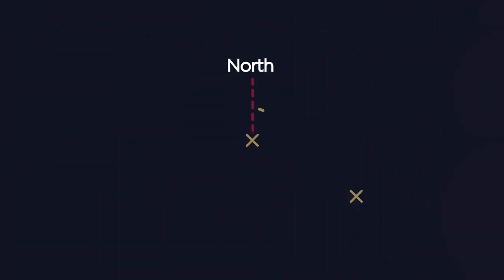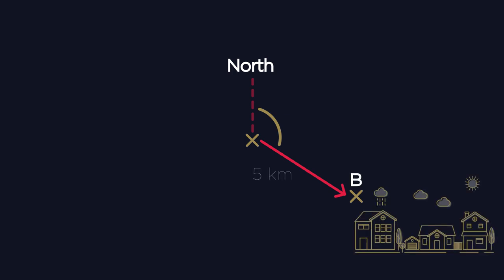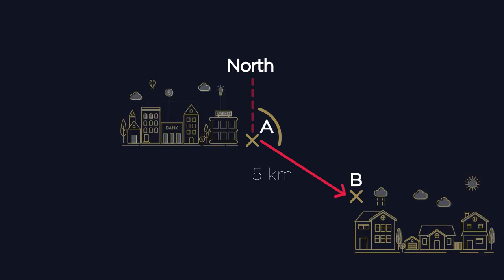If we are told a place is on a bearing and distance away, such as town B is five kilometres away from town A on a bearing of 120 degrees, we find that bearing from A, then measure using a scale to get to B.